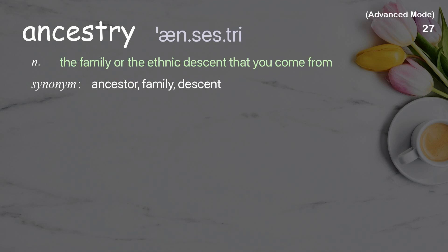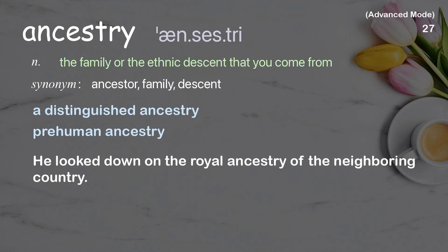Ancestry. The family or ethnic descent that you come from. Examples: a distinguished ancestry, pre-human ancestry. He looked down on the royal ancestry of the neighboring country.